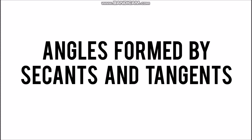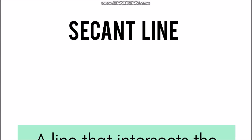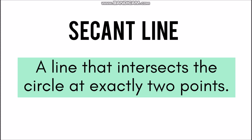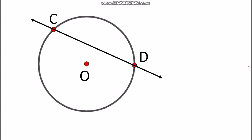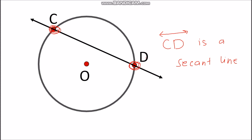For today's lesson, we will be discussing angles formed by secants and tangents. From past lessons, we already discussed that a tangent is defined as a line that intersects the circle at exactly one point. Before we proceed with the new theorems, let's define what a secant is. A secant line is a line that intersects the circle at exactly two points. For example, line CD intersects the circle at point C and point D.